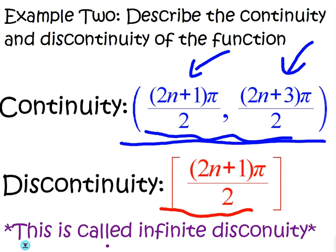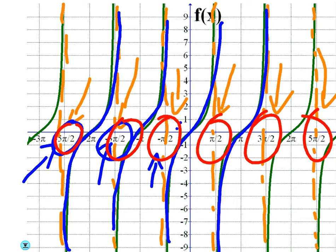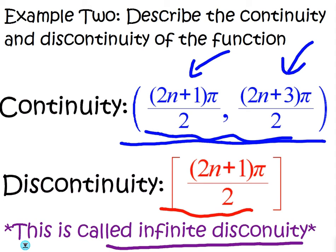The name for this is infinite discontinuity. Why? Because there's infinite jumps from the left and right. We talked about the fact that the limit from the left and right of these would be either infinity or negative infinity. So that's called infinite discontinuity.